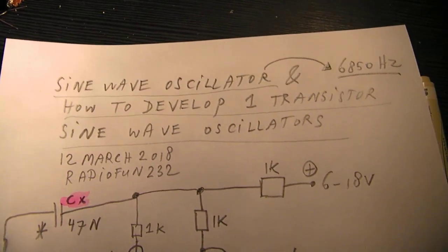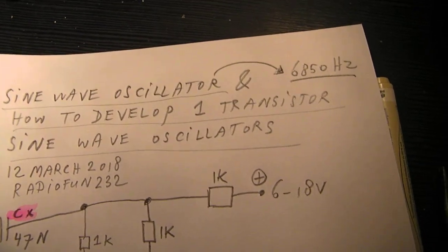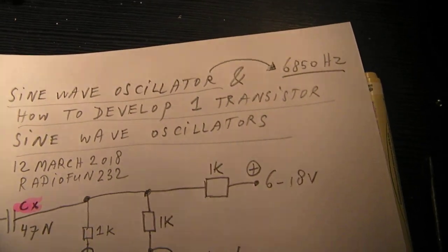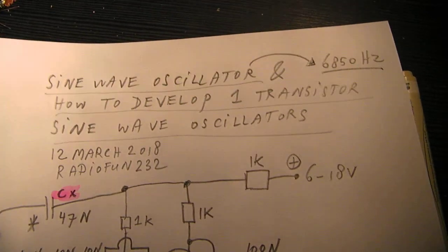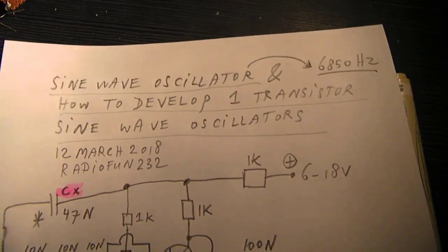In this video is a sine wave oscillator working on 6850 Hertz, so that's audible, and how to develop such simple one transistor sine wave oscillators.